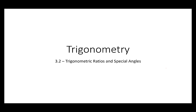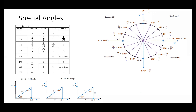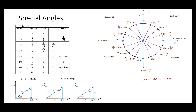Now we're going to look at trigonometric ratios and special angles. A special angle is basically an angle that has an exact value. Reviewing back to your trig ratios, your primary trig ratios include the sine ratio, the cosine ratio, and the tan ratio. The most common mnemonic we use to represent that is SOHCAHTOA.